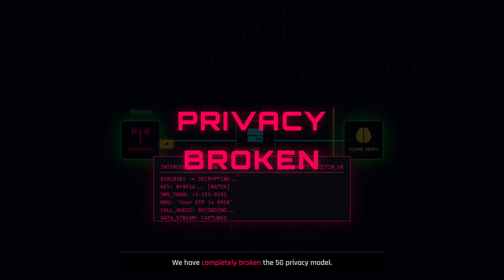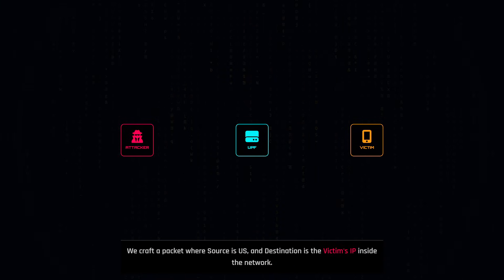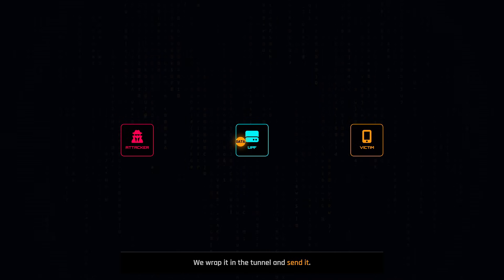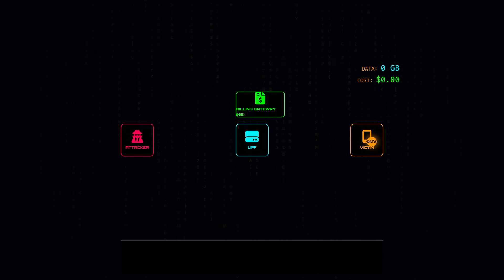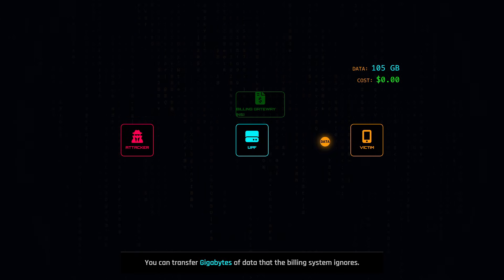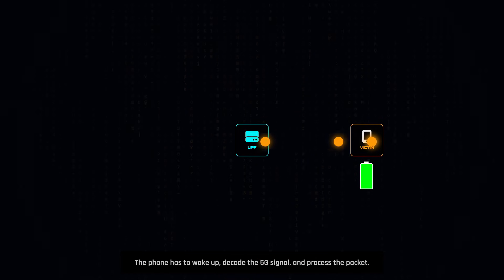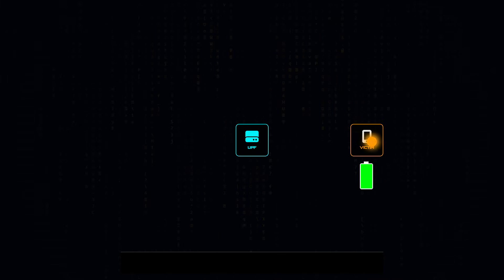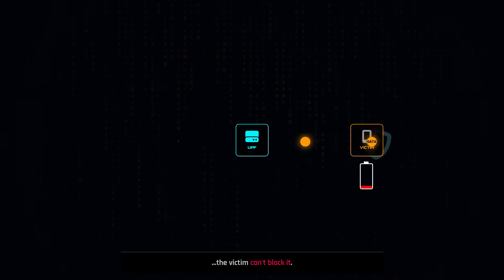If you aren't interested in spying, you can just cause chaos. The paper calls this reflective injection. We craft a packet where the source is us, the attacker, and the destination is the victim's IP inside the carrier network. We wrap it in the tunnel and send it — the UPF routes it to the victim. This allows for two things. First, billing fraud: because the traffic is being routed internally, the billing counters which often sit on the edge of the network might not see it. You can transfer gigabytes of data that the billing system ignores. Second, battery exhaustion: we can flood a target phone with junk traffic. The phone has to wake up, decode the 5G signal, and process the packet. This drains the battery and burns through their data plan. And because the traffic looks like it's coming from the carrier itself, the victim can't block it.